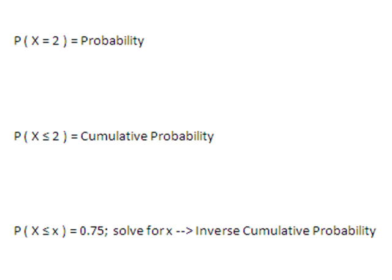Minitab can also compute an inverse cumulative probability. Let's say you're already given a percentile and you want to know what value of x is at that percentile — so the probability that x is less than or equal to what value of x will equal 0.75, or the 75th percentile. Minitab can give you that unknown value of x.